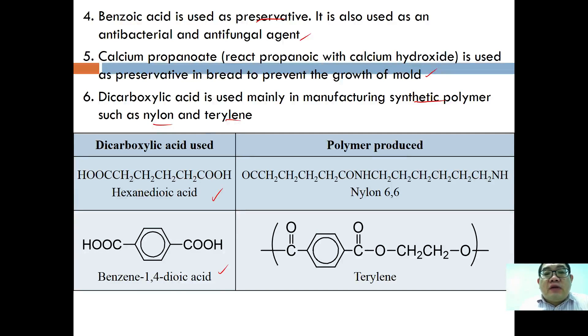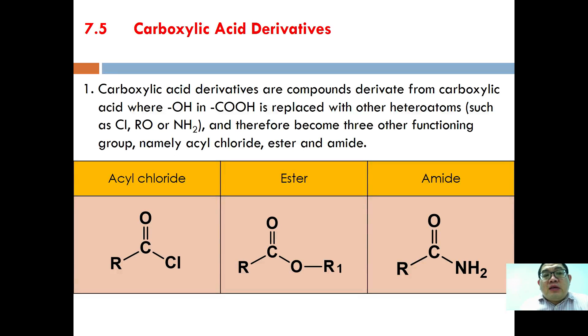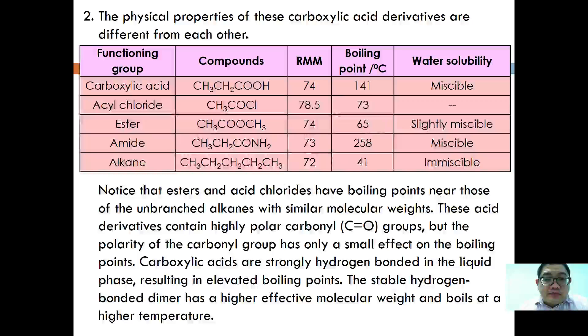We finish about carboxylic acid and move straight to carboxylic derivatives. Carboxylic acid derivatives are compounds derived from carboxylic acid where the OH in the COOH is replaced by other heteroatoms such as chlorine, OR, and NH2, and therefore become three other functional groups: acyl chloride, ester, and amide respectively.